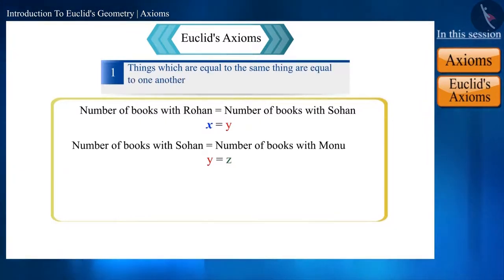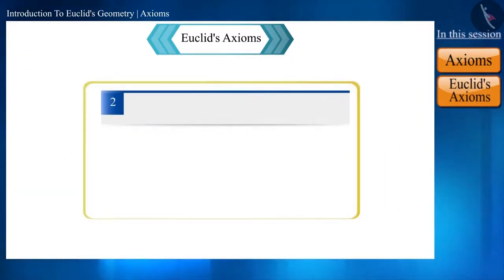Friends, according to Euclid's first axiom, things which are equal to the same thing are equal to one another. So here x and z will be equal, that is we can say that Rohan has as many books as Monu.